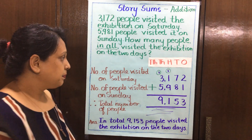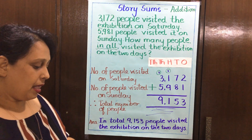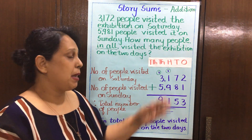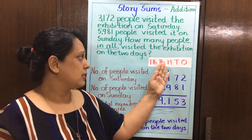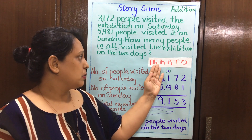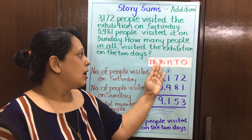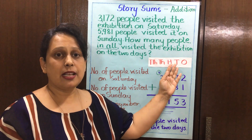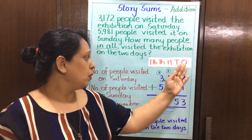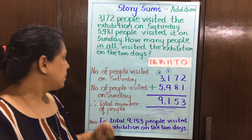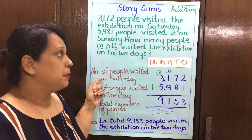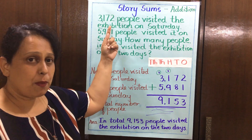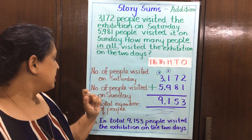Then I put my place value houses: thousands, hundreds, tens and ones. I pick up my statement from the story itself.